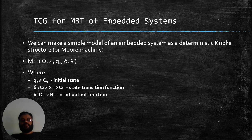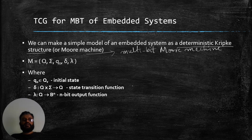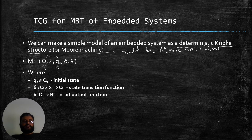A very simple model for embedded systems is to make use of a deterministic Kripke structure. This is analogous to a multi-bit state Moore machine. If you recall from automaton theory, a Moore machine is a formalism that has output built into its states. Formally, a Moore machine is a tuple consisting of: a finite set of states Q, a finite set of input symbols sigma, an initial state q-naught which is an element of Q, a transition function delta which takes a state and an input symbol and returns the next state.